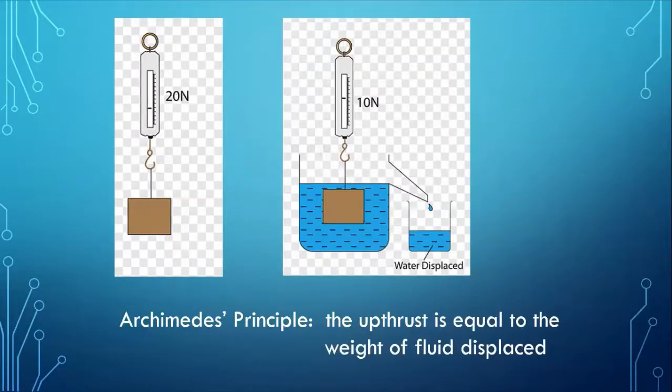Now, what about Archimedes principle? Well, if we take a Newton meter and we hang a metal block from it. And let's say we get a reading of 20 Newtons. That's the weight of the metal block. If we take the same metal block and we immerse it in water. We find that the Newton meter only reads 10 Newtons. So there must be an upward force, an upthrust on the metal of 20 minus 10, which of course is 10 Newtons. Now, Archimedes principle, the upthrust, whatever it is, is equal to the weight of fluid displaced. Now, remember upthrust is a force in Newtons, the weight of a fluid also in Newtons.